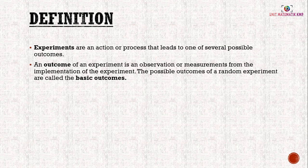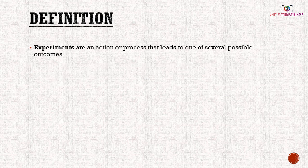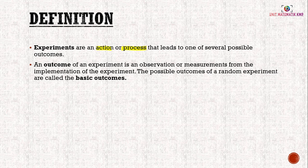By definition, experiments are an action or process that leads to several possible outcomes. An outcome of an experiment is an observation or measurement from the implementation of the experiment. The possible outcomes of a random experiment are called the basic outcomes — outcomes are the result from our experiment.